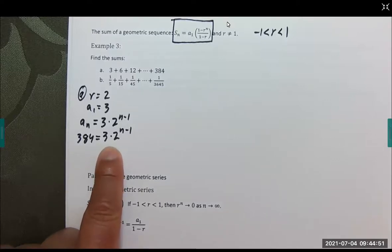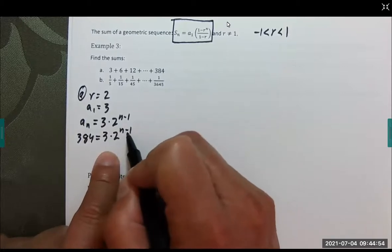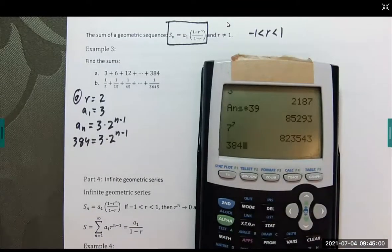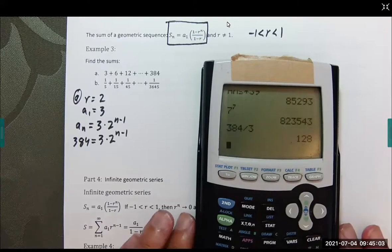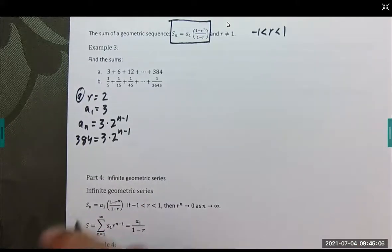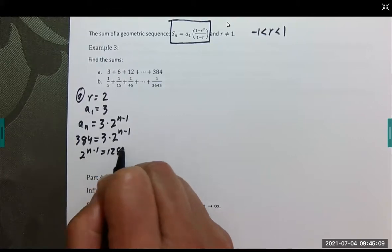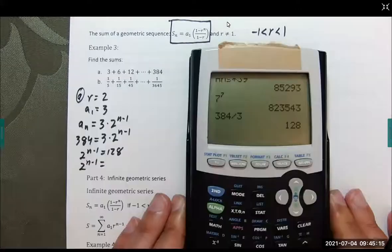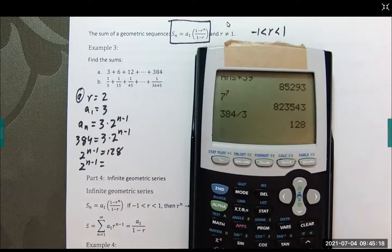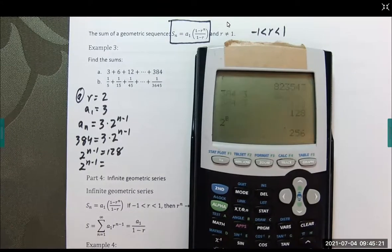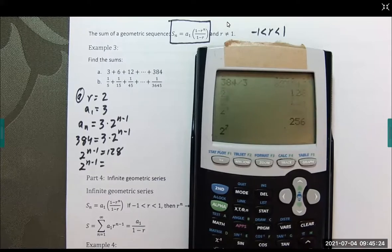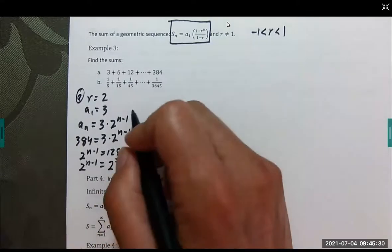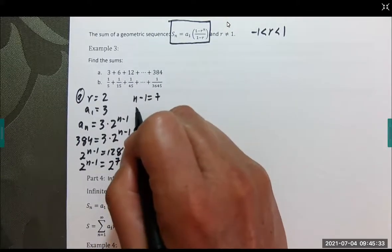One thing I want to warn you against is do not multiply 3 times the 2, because it has the 2 as an exponent, which is more important. Let's take 384 and divide by 3. I get 2 to the n minus 1 is 128. 128 is 2 to the 7th power, which means n minus 1 has to equal 7, which means n equals 8.